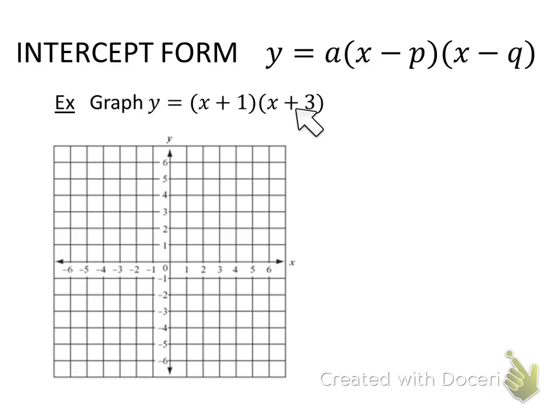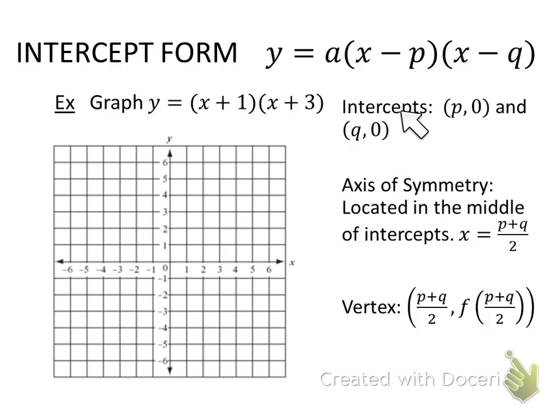Last example which is wrong on your sheet of notes. Your last example is wrong. It should be y equals the quantity x plus one times the quantity x plus three. Again I'm putting up my steps over here. So from the equation I should immediately be able to identify the intercepts. One of my x coordinates is negative one zero. Similarly the other x coordinate is going to be the opposite of three. Negative three zero. I'm going to immediately plot them and find the axis of symmetry in between them. Negative two is right in between them. Axis of symmetry.